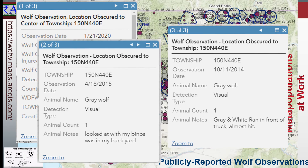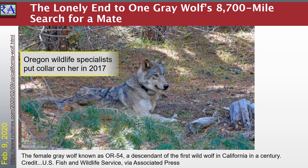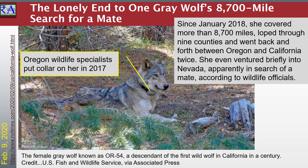In 2020, this wolf female unraveled an interesting story. It had been weeks since biologists of the California Department of Fish and Wildlife were able to track this gray wolf's movement. She had been criss-crossing Northern California for nearly two years after she separated from her pack in Oregon. Biologists had found her movements using a radio collar that wildlife specialists in Oregon placed around her neck in 2017. Since January 2018, she covered more than 8,700 miles, looped through nine counties, and went back and forth between Oregon and California twice. She even ventured briefly into Nevada, apparently in search of a mate. She crossed through apparently open habitat areas with suitable habitat sinks, but no wolves were using them. It takes two wolves to make a viable offspring and achieve continuation of the population. Then the collar went silent.